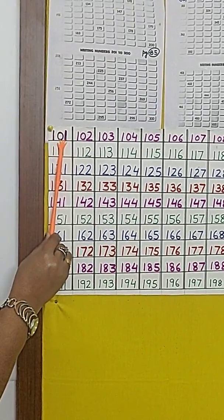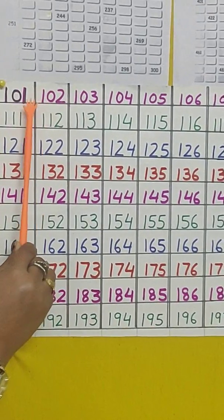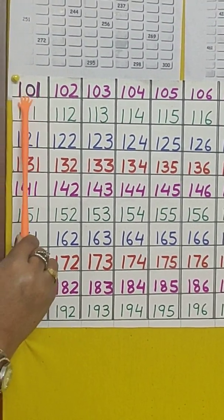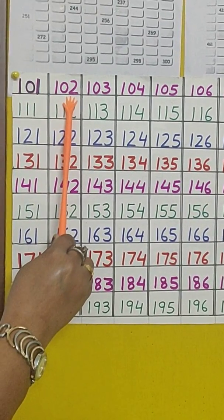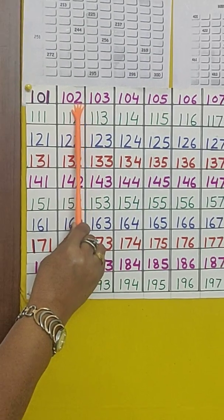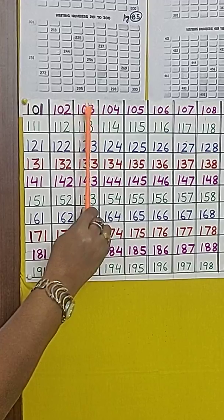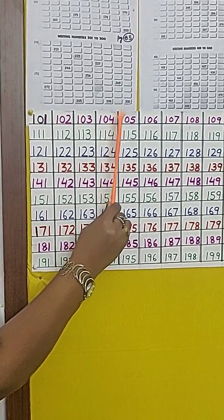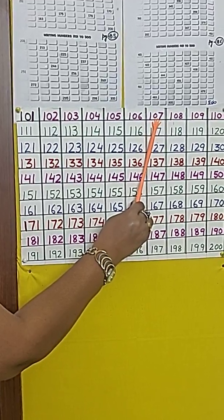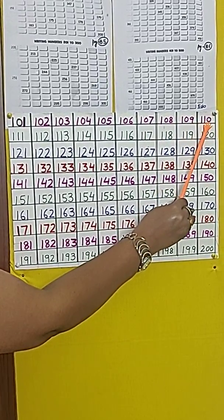The number next to 101 will be 102. That means when we add 1 to the ones place, 101 becomes 102. Similarly, when we add 1 to 2 it becomes 103, then 104, 105, 106, 107, 108, 109, 110.